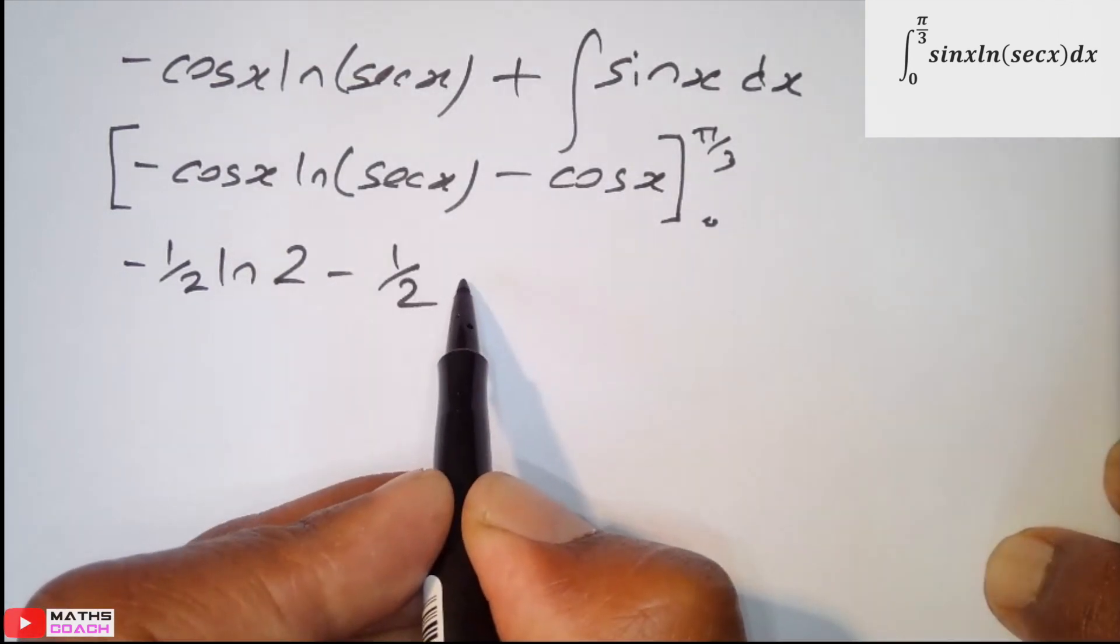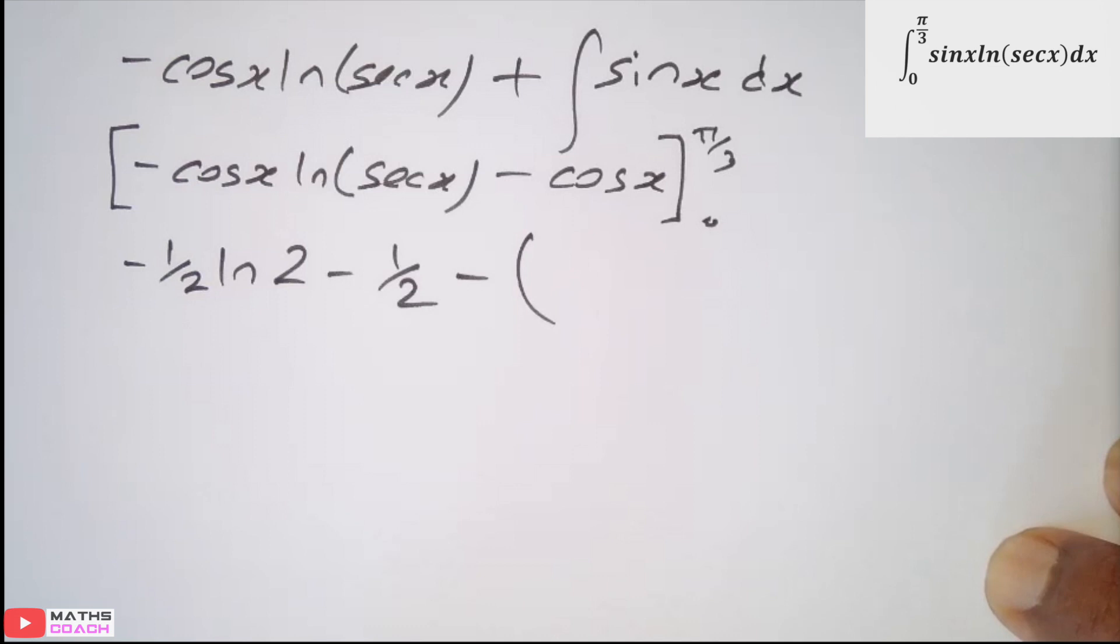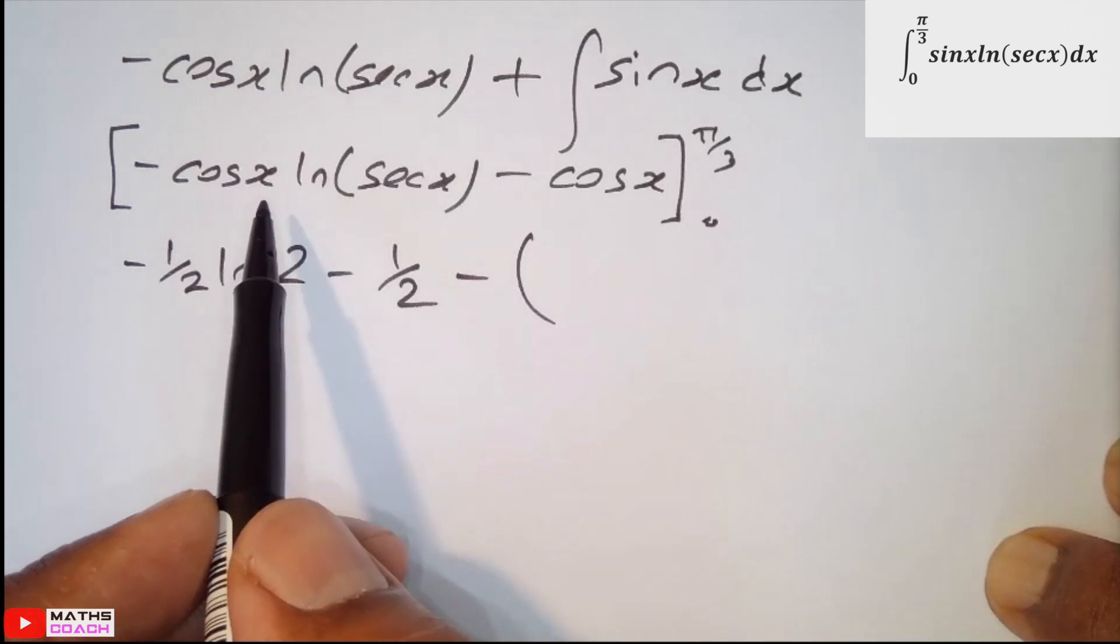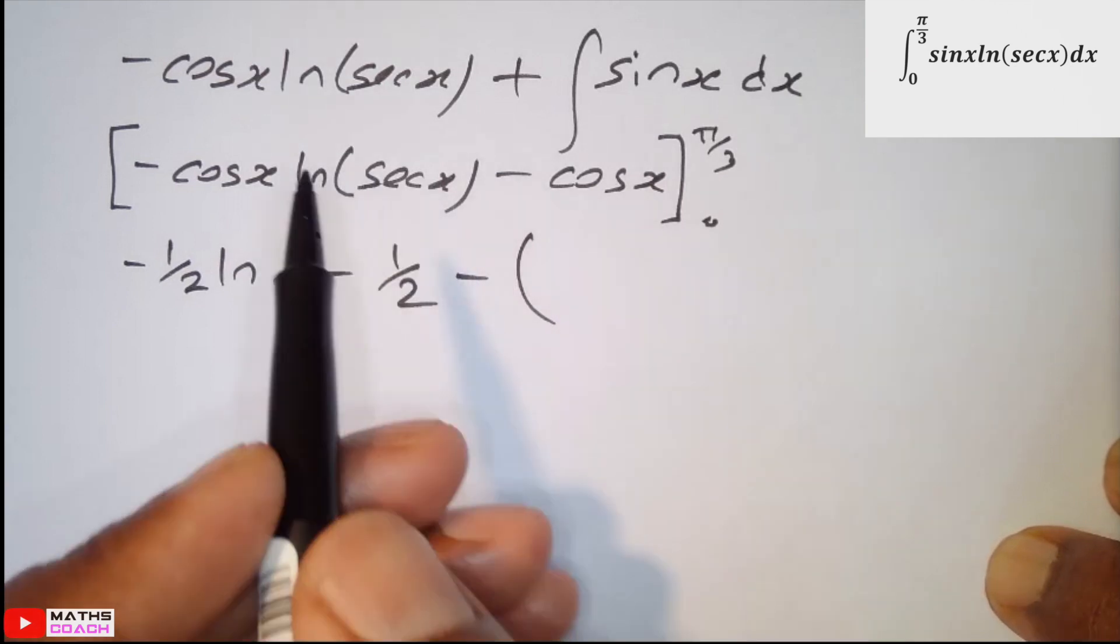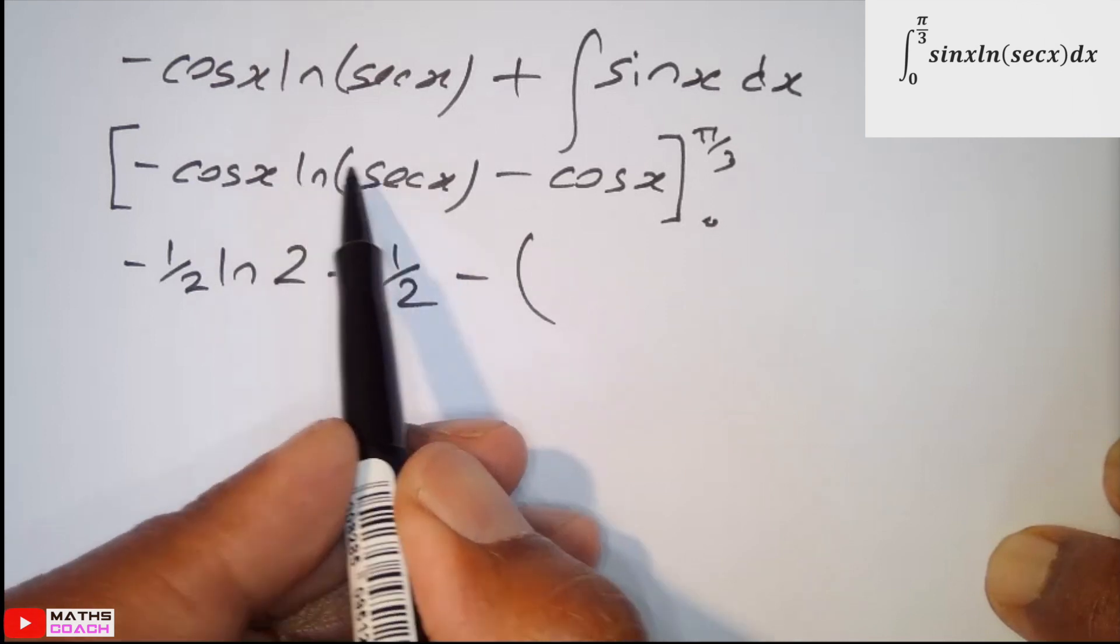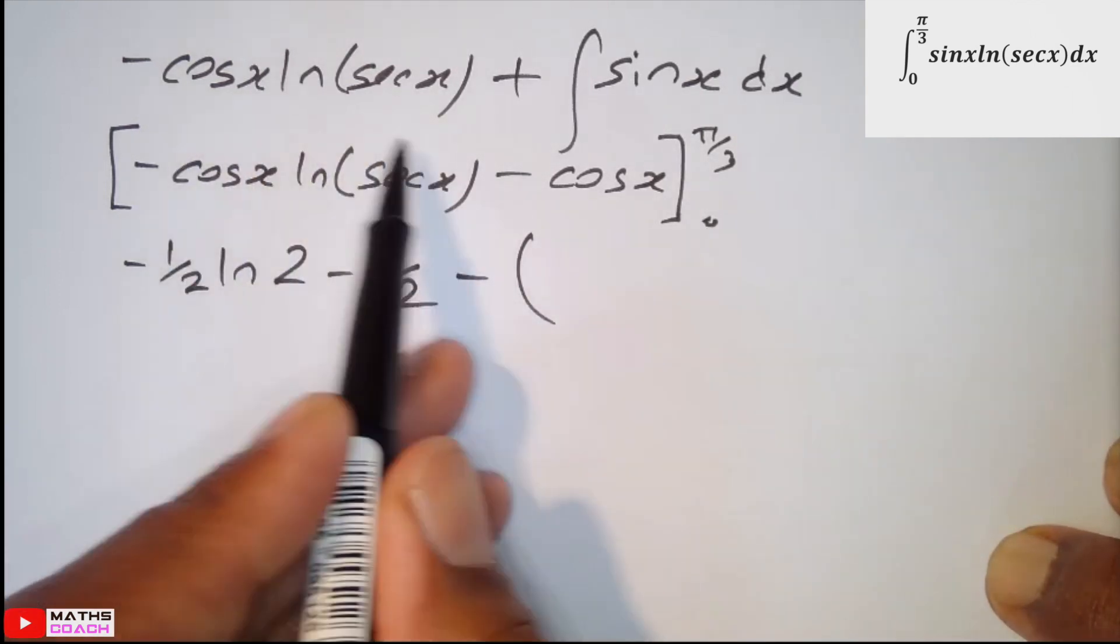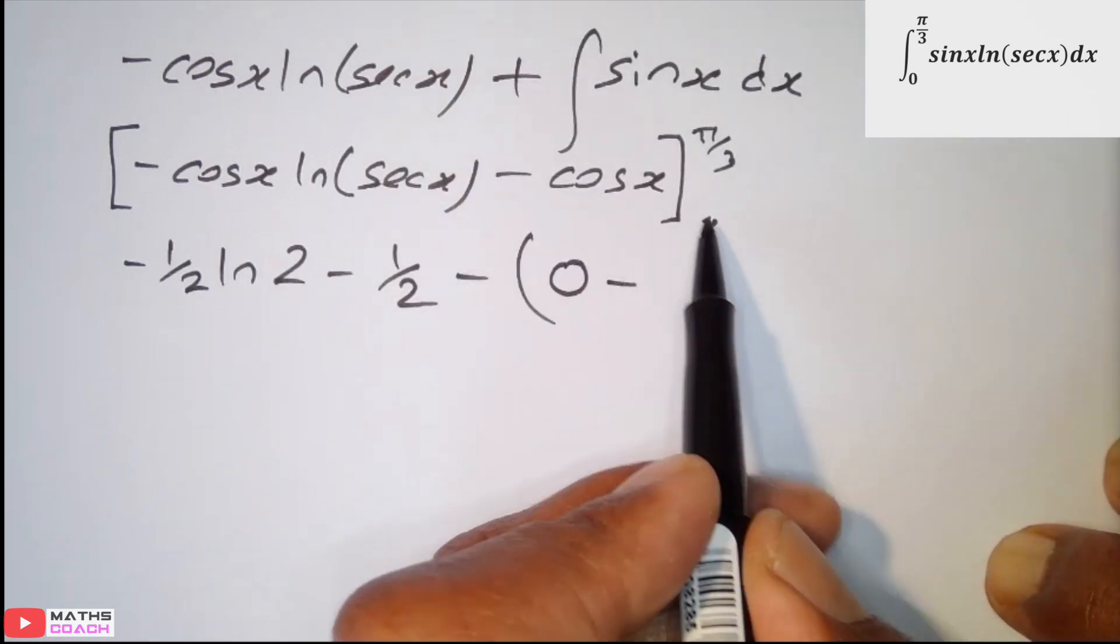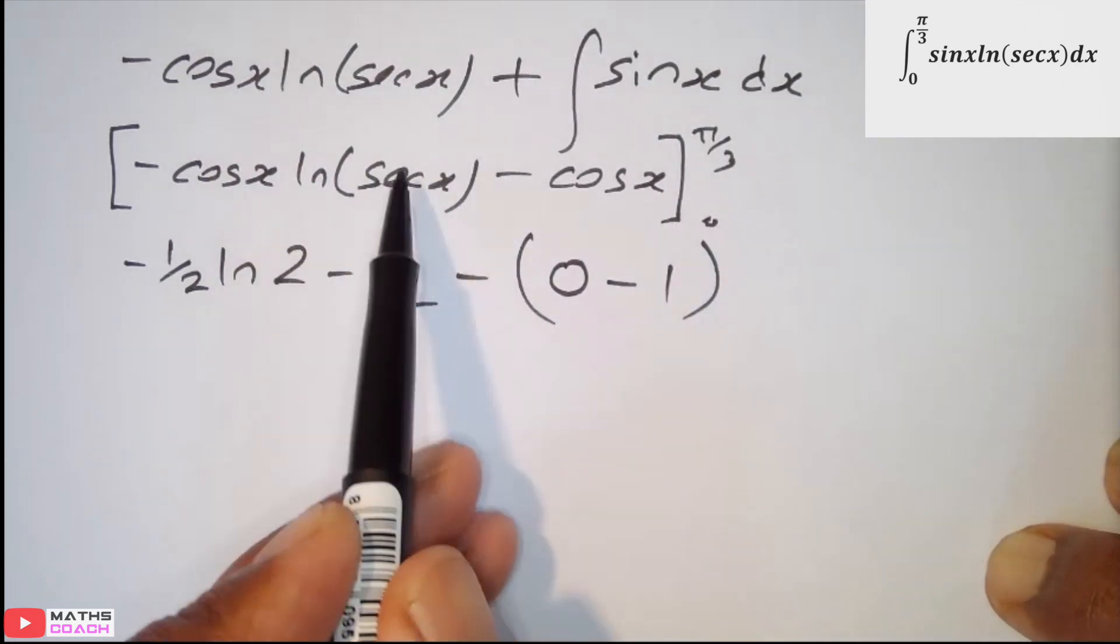And like before, before we put our lower limit in, always put a minus and an open bracket. We're now going to put 0 in. Now, cos of 0 is 1. So, here, we have 1 over cos x. We end up with 1 over 1. ln of 1 is 0. So, in actual fact, when you put 0 into this entire expression here, we end up with just 0. Minus 0 in there. Cos of 0 is 1. Really important about the 0 being inputted here.